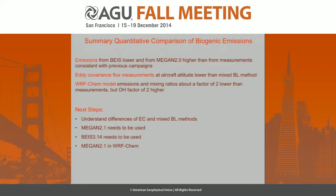In summary, we tried to quantify and verify the emissions of isoprene. The emissions estimated from aircraft measurements are somewhat higher than BEIS and lower than MEGAN. The eddy covariance flux method shows somewhat lower emissions than the mixed boundary layer method. WRF-CAM is consistent with the emissions input, and the isoprene WRF-CAM predicts is somewhat lower than measurements. Next steps include understanding the differences between the eddy covariance and mixed boundary layer methods, using MEGAN 2.1 instead of 2.0, using BEIS 3.14, and incorporating MEGAN 2.1 into WRF-CAM for better comparison.